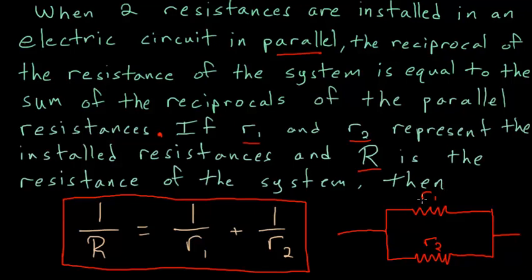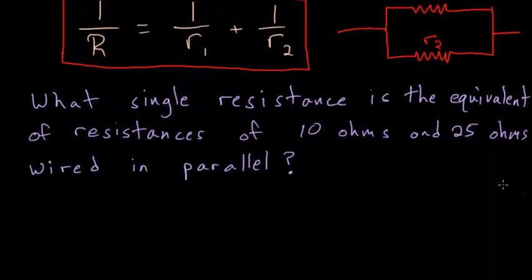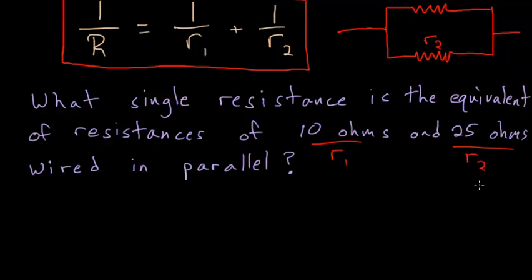The question is, if we're given values for R1 and R2, what would be the total resistance of the system? The question goes on: what single resistance is the equivalent of resistances of 10 ohms and 25 ohms wired in parallel? So basically this could be our R1 and this could be our R2, and we just need to figure out what R is.